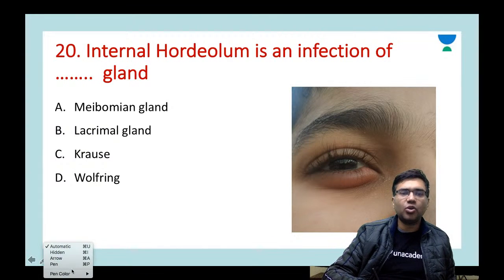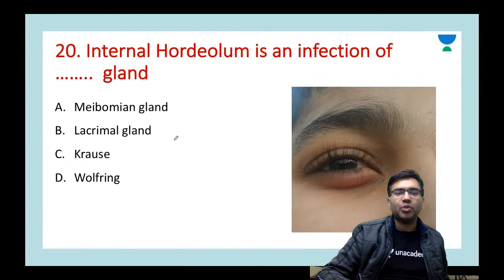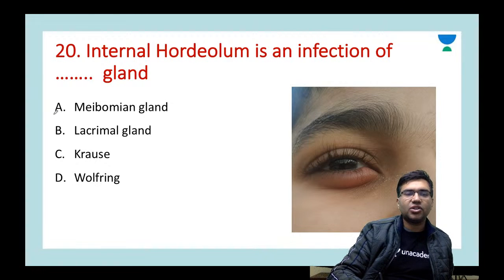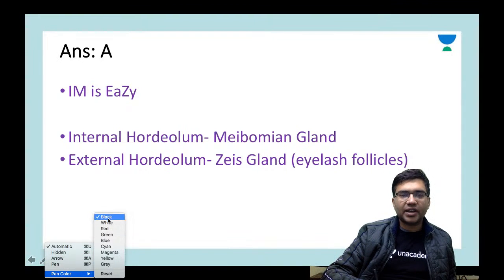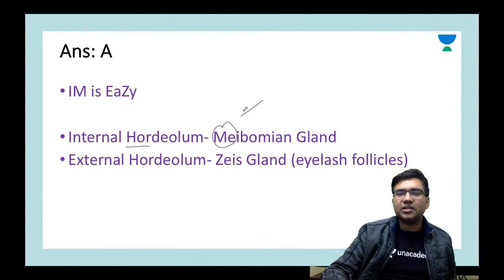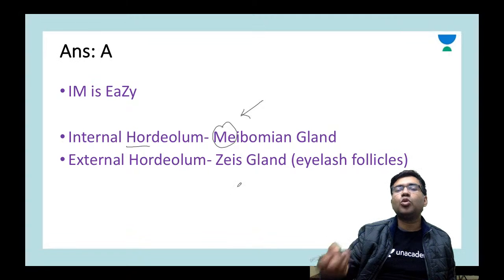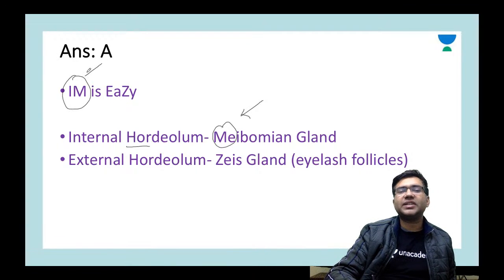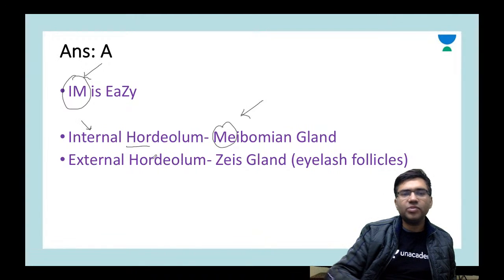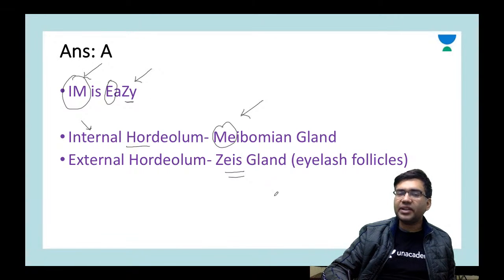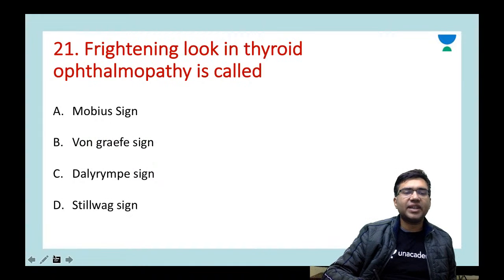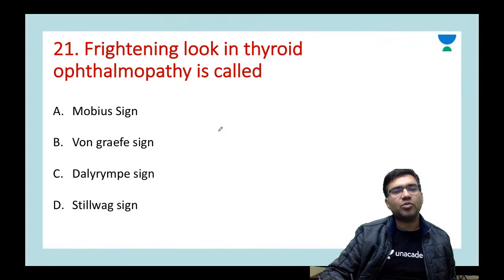Next question: internal hordeolum is an infection of which of the following? Options: Meibomian, lacrimal, Krause, or Wolfring glands. The answer is A — Meibomian gland. Remember the mnemonic 'IM is Easy': Internal hordeolum = Meibomian gland inflammation. For external hordeolum, remember 'EZ': External = Zeiss gland inflammation (at the opening of eyelashes).